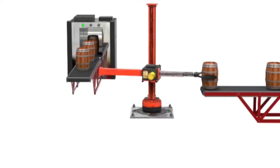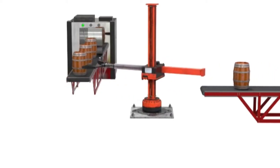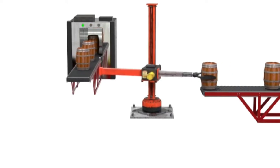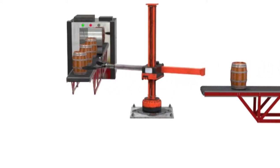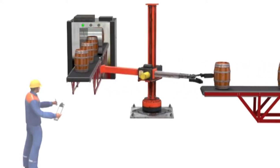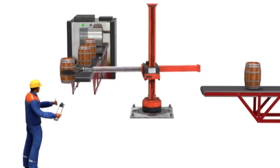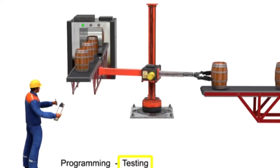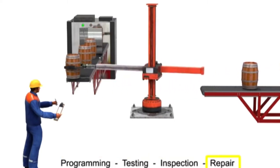The first step in the design process for any robot is a risk assessment of its potential hazards. Studies have shown that most injuries occur not during normal operation, but during times when human interaction is most prevalent: programming, testing, inspection, and repair.